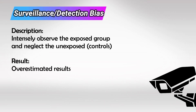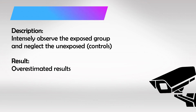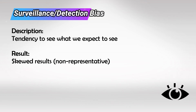Surveillance bias, also known as detection bias, is seen in case-control studies in which the observer and researcher intensely monitor the exposed group — for example, the smokers — and under-observe the unexposed group. Observer bias is the tendency to see what we expect to see.